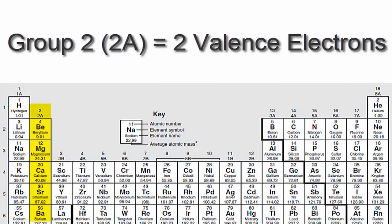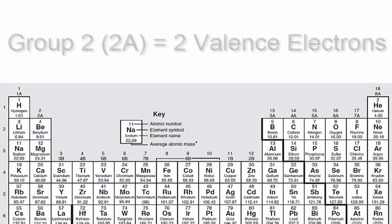If you look at group 2 or 2A, you'll see that those elements have two valence electrons.